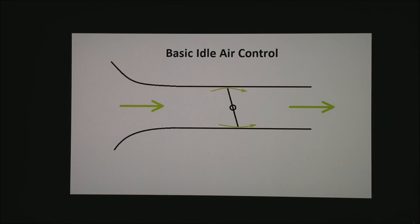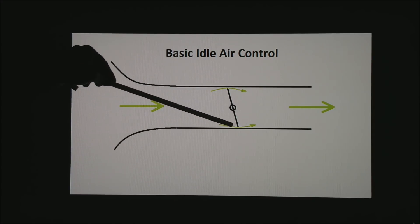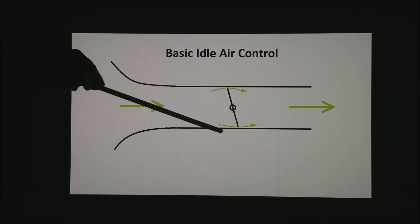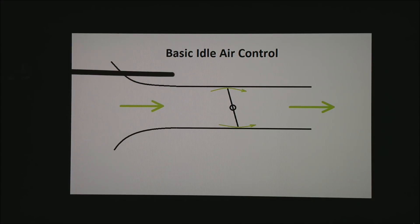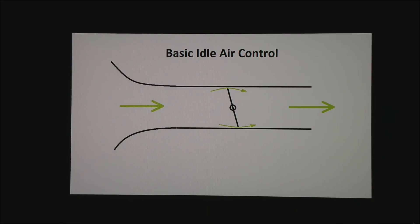This is your basic throttle body. Over on the left would be your air filter — incoming air — and based on the angle of the throttles, air leaks around the bottom and top and goes onto the motor. This is generally controlled with some sort of small adjuster screw on the outside of your throttle body to open this just a little bit to control idle speed.